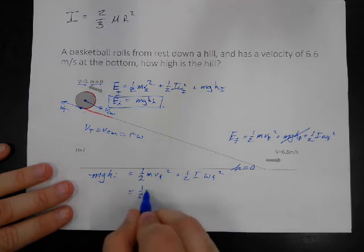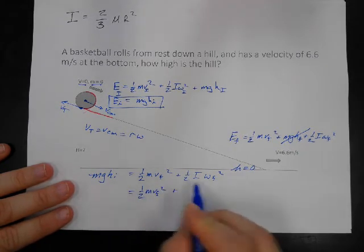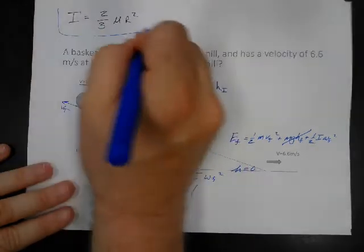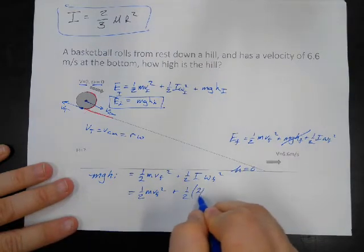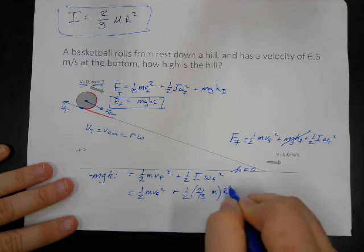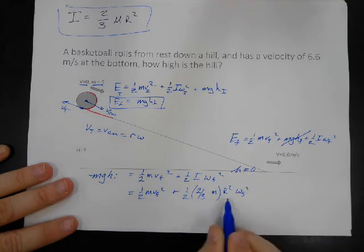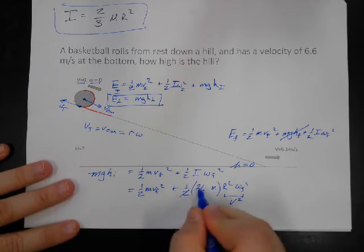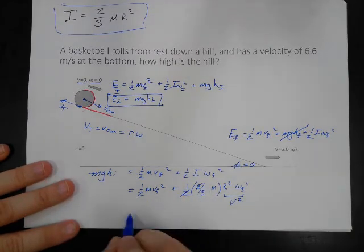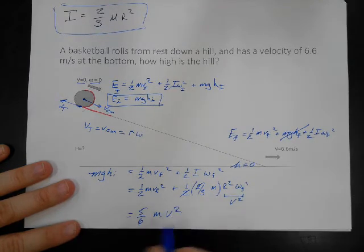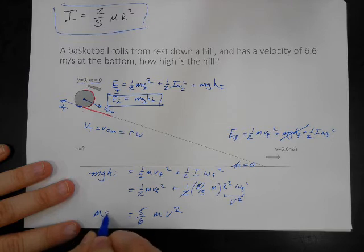So, we'll have one-half mv final squared plus one-half, and we put in what i is up here, the thing we looked up, is two-thirds the mass and then the radius squared and omega final squared. But this is v squared. And so, we'll have one-half plus one-third is five-sixths mass times velocity squared.